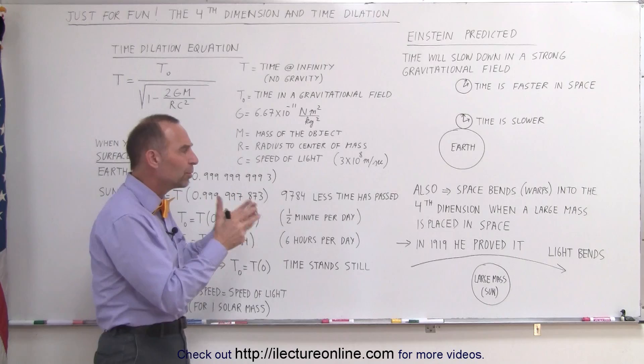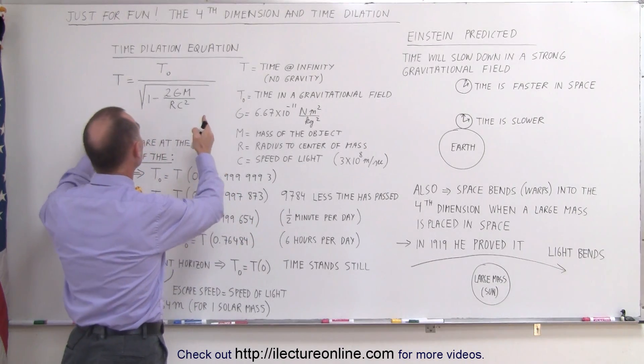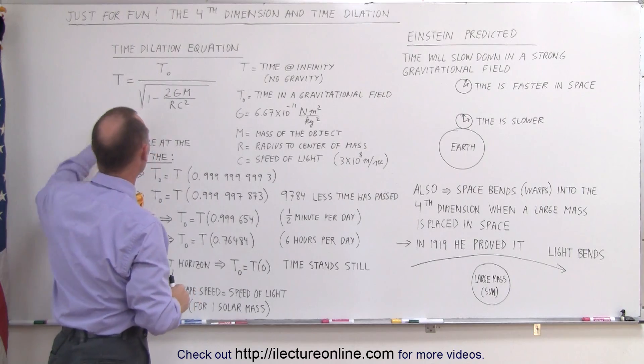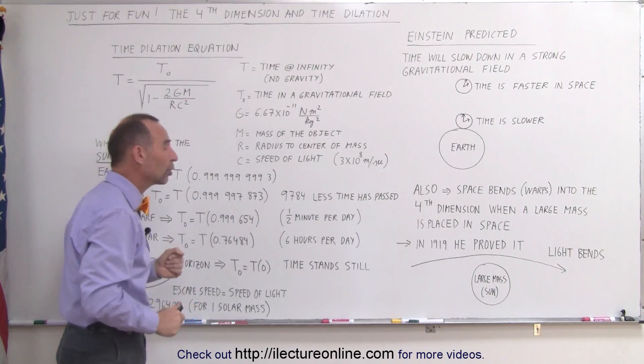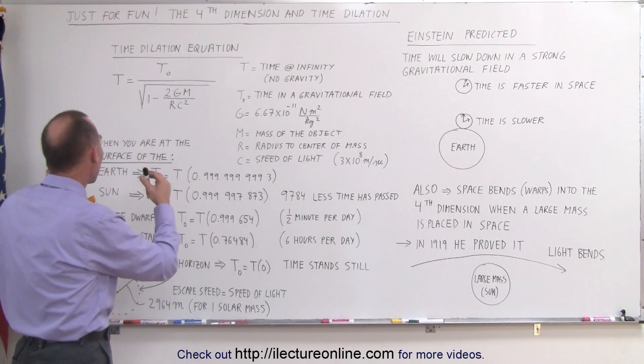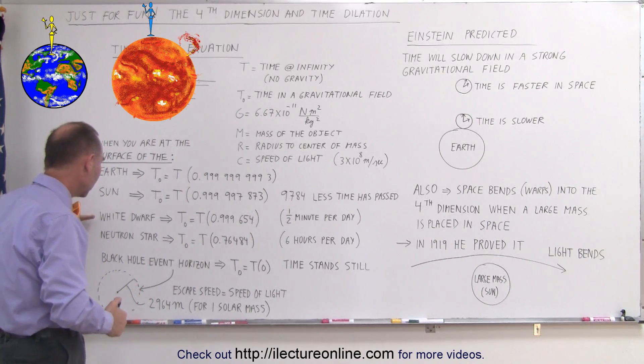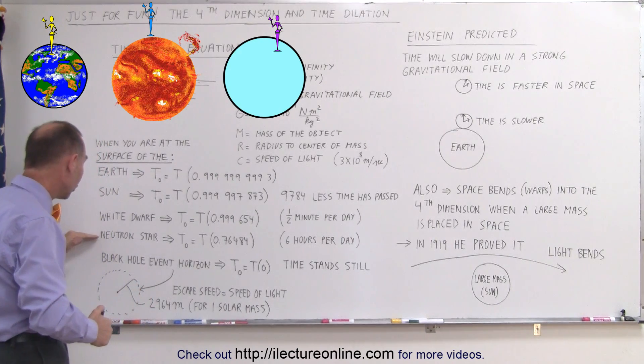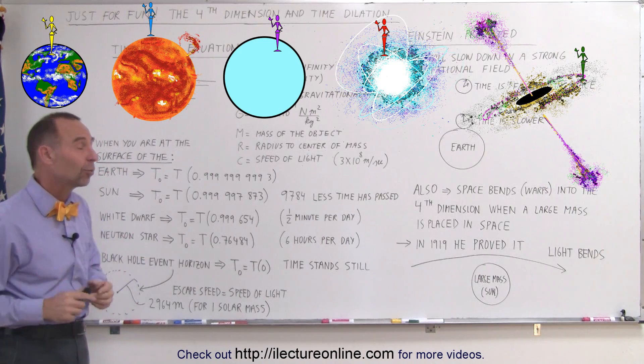From all these studies and these predictions, out came an equation that was actually able to calculate how much time changes. This is called the time dilation equation. And here are the variables that we use in the equation. When we use that equation to predict what the time change would be on the surface of the Earth, on the surface of the Sun, on the surface of White Dwarf, on the surface of Neutron Star, and on the surface of Black Hole, we get some very interesting results.